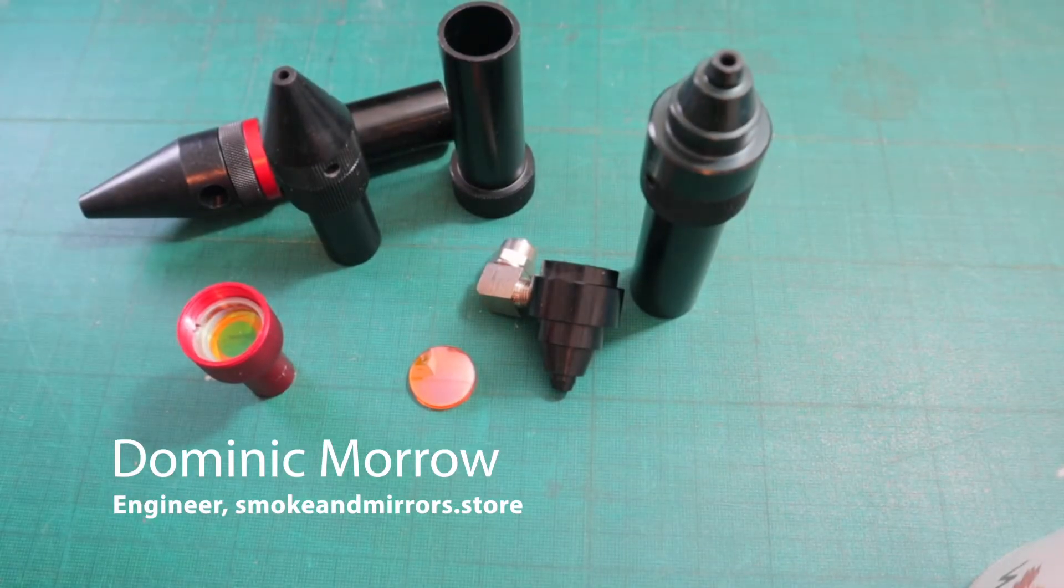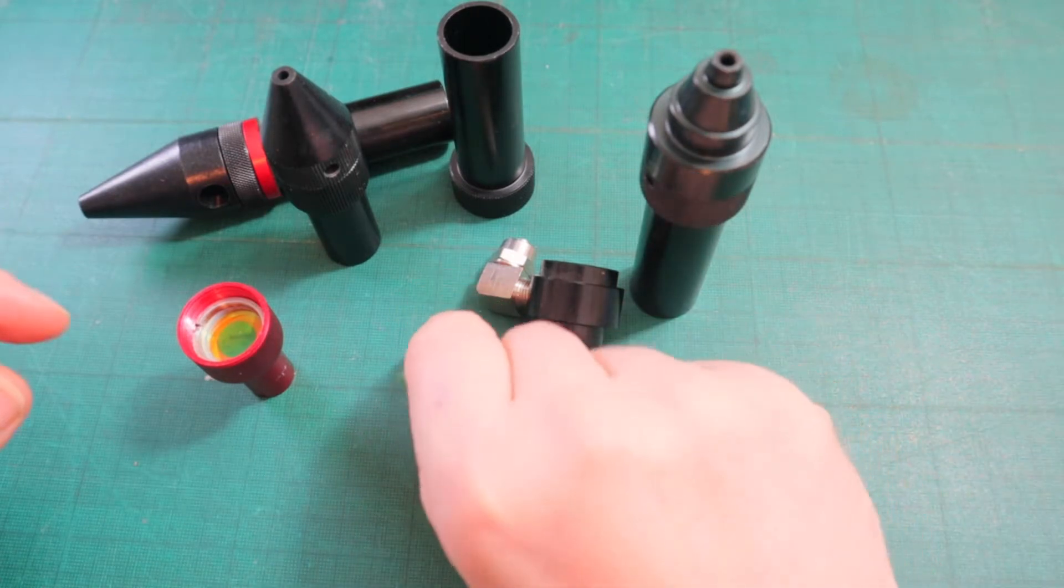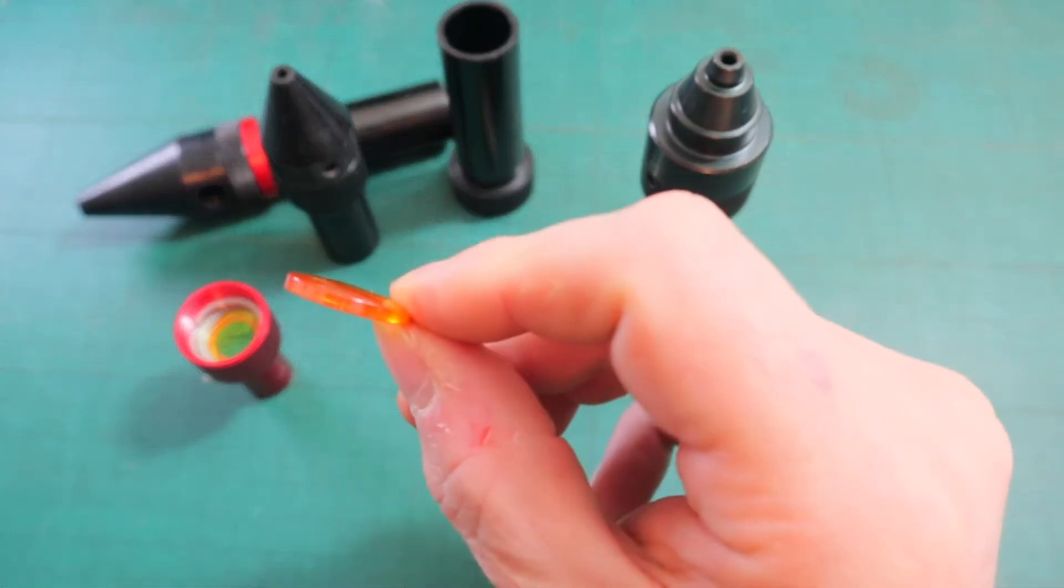In this video I will attempt to give a basic explanation of the plano-convex lens that is commonly found in most CO2 laser cutters.